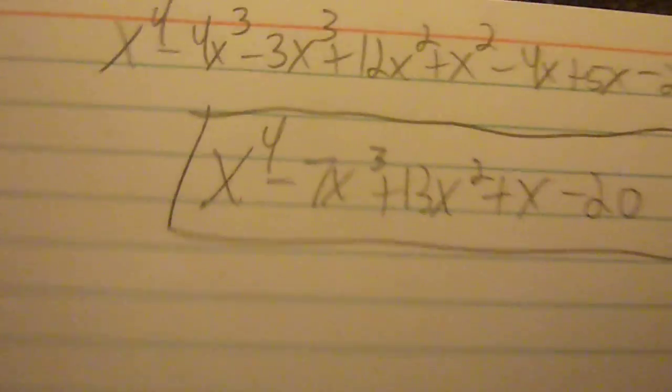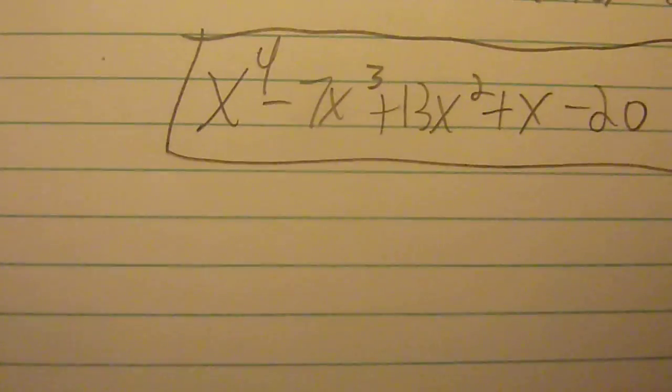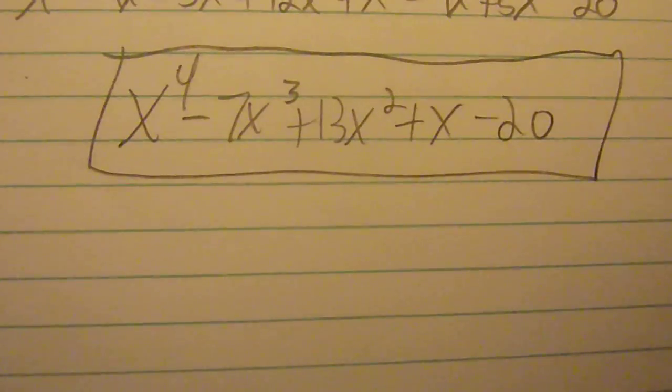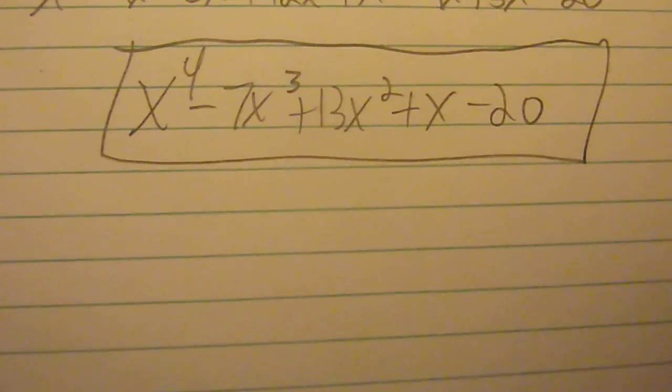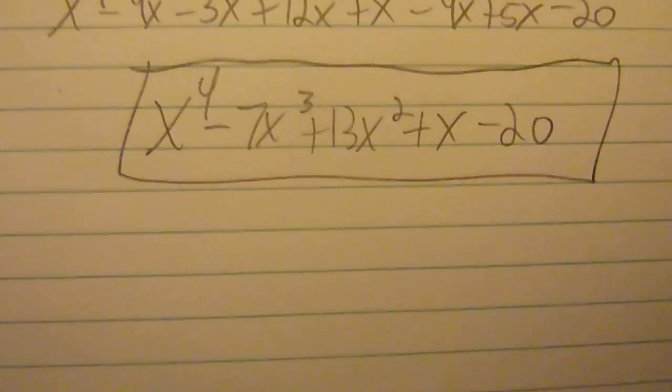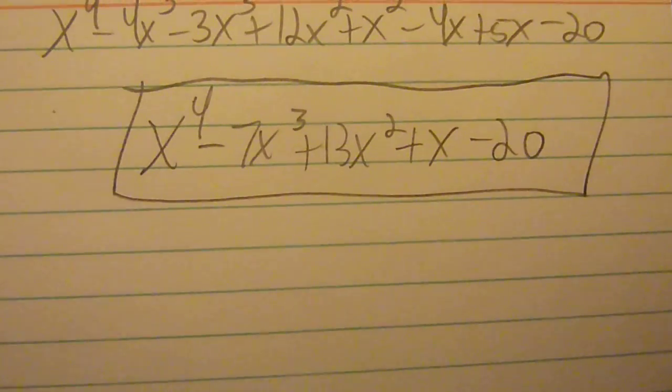You're going to go ahead and FOIL those out. And after you FOIL those out and you simplify it, you're going to end up with your answer, which is x to the fourth minus 7x cubed plus 13x squared plus x minus 20. And that's your polynomial with the four zeros that you started with.